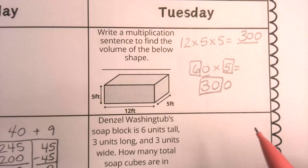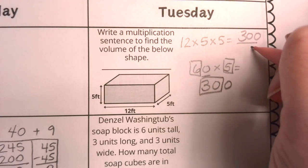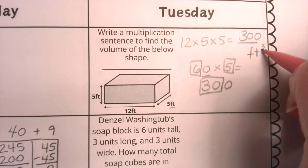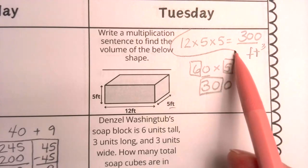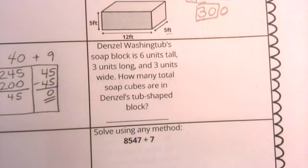Now, don't forget, I do need to stop and think 300 what? Since this is volume, I'm going to include the unit, which in this case is feet, and I'm going to include my tiny 3 to show that that is 300 feet cubed. That is the answer to our first question in our Tuesday column.